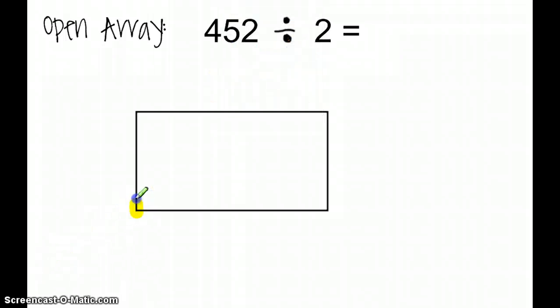If you notice, this looks just like the same sign that we use when we do long division or partial quotients. So I'm going to write my 2 on the outside of this. Normally, my 452 would go in the middle, but for open array, it's actually going to go on the outside.